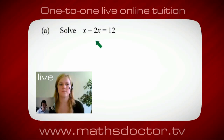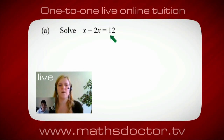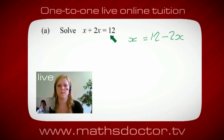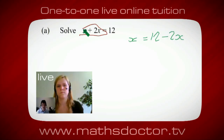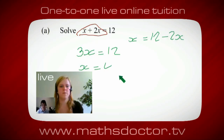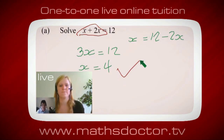So let's have a look at this one. Solve x plus 2x equals 12. What do you think you do first? I want x on its own, so I would put x equals 12 minus 2x. Well, what we want to do first is get all of these x's together. Can you see anything we can do? Oh okay, it's 3x, isn't it? Yeah, absolutely. So 3x equals 12, and so x equals 4. Brilliant, spot on, well done.